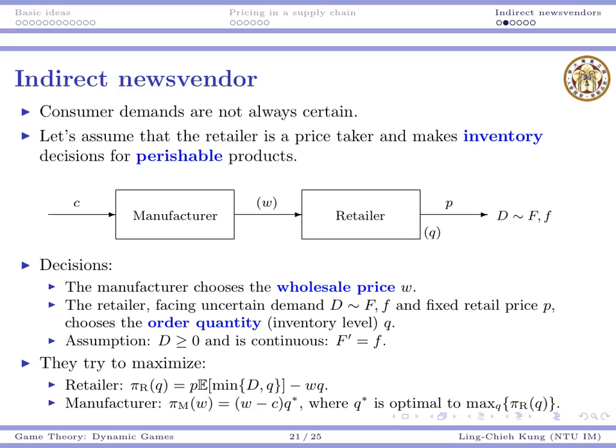For the manufacturer, it is completely different. The manufacturer faces certain demand because production can be made after the retailer places an order. The retailer will order q* units, and given that, the manufacturer makes production and earns w minus c as the sales margin. So there is no demand uncertainty for the manufacturer.